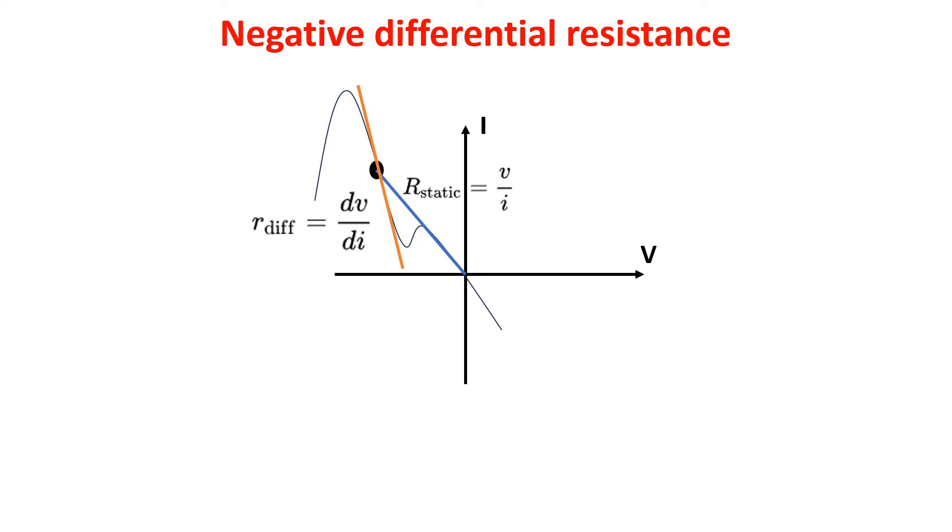So in general, with negative resistance, you mean negative differential resistance, which is the derivative of the voltage with respect to the current, so the ratio of a small change in voltage to the corresponding change in current, the inverse slope of the IV curve at the point.